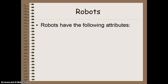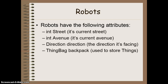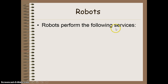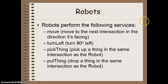Robots have a whole bunch of attributes. We have a street and an avenue — both integer values — indicating where the robot is currently standing. We have a direction that the robot is facing: north, east, south, or west. And then we also have a backpack called a thing bag, which is a type ThingBag used to store things and keep track of how many things the robot currently has. Robots are also going to have services. For example, robots can move, which makes the robot travel to the next intersection in whatever direction it's facing. Robots can turn left — a 90-degree turn — so if facing north, it would turn to face west. It can pick up a thing using pick thing, and it can put things down in the same intersection it's currently standing in.